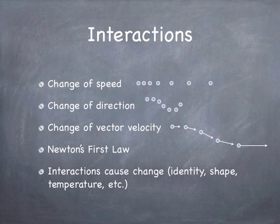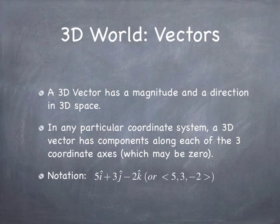If the speed is constant but the direction of motion is changing, that also requires an interaction. These two properties — direction and speed — are the elementary properties of the velocity vector. The velocity vector's size is the speed and its direction tells you which way the object is going. If the velocity vector is not constant, there is an interaction. This is formalized through Newton's first law: if the velocity vector is constant there's no interaction; if it isn't constant, there is one. For now we'll focus on changes in motion.